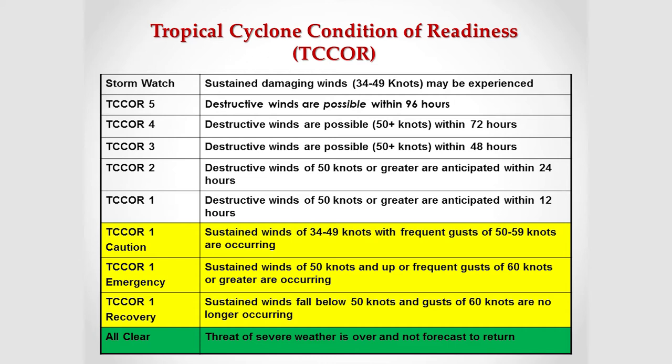T-Core 1 Caution is where we are actually experiencing sustained winds of 34 to 49 knots with frequent gusts of 50 knots or greater. During T-Core 1 Caution, only mission essential personnel are allowed on base. We secure the main gate of Sasebo — there are very large trees at the main gate area that pose a hazard with high winds — so we divert all traffic to the back gate, which remains open.